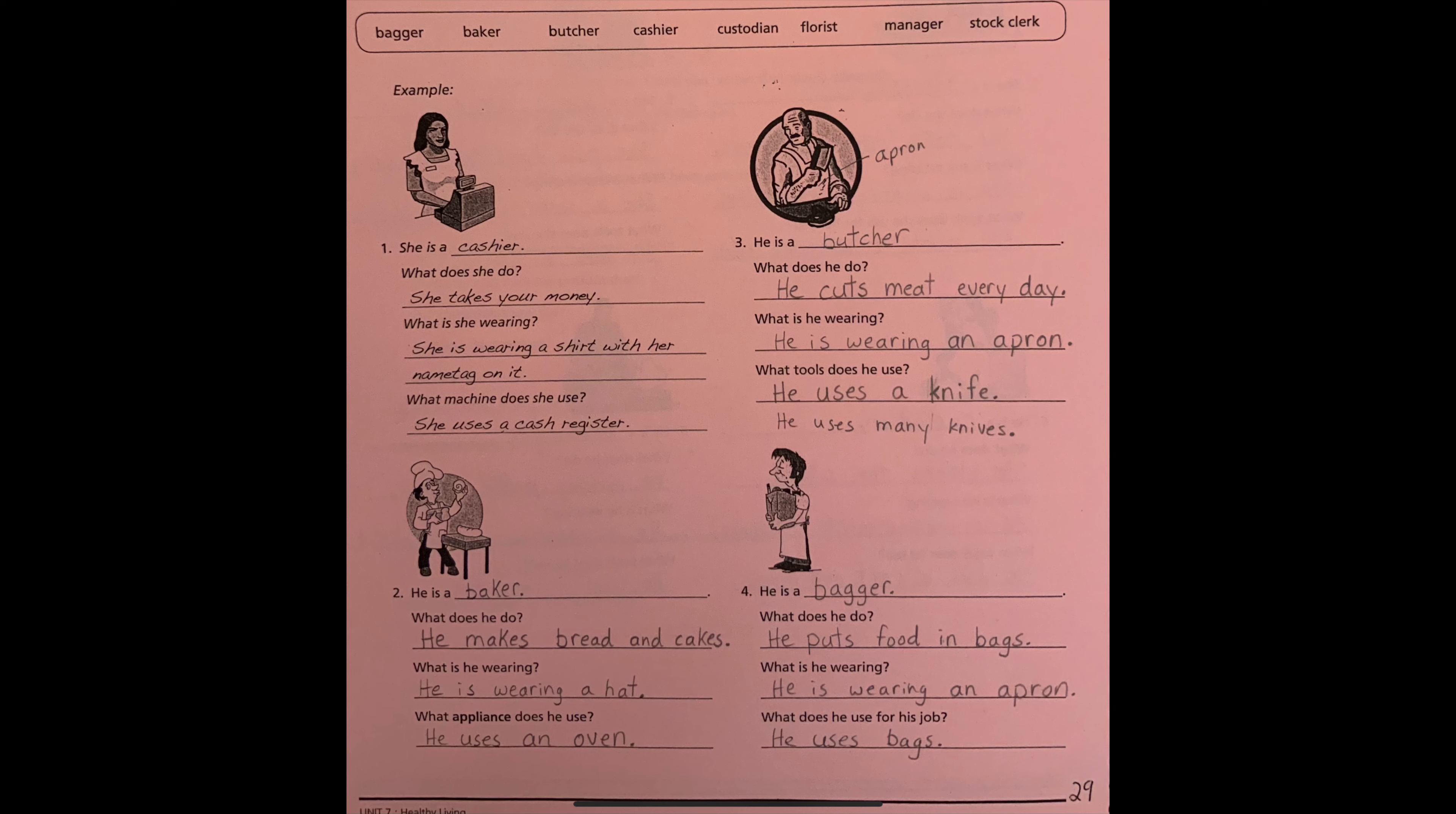Students, if I want to change the sentence to knives, because he uses many different knives, then I need to say he uses knives. I change the F to V. Knives.